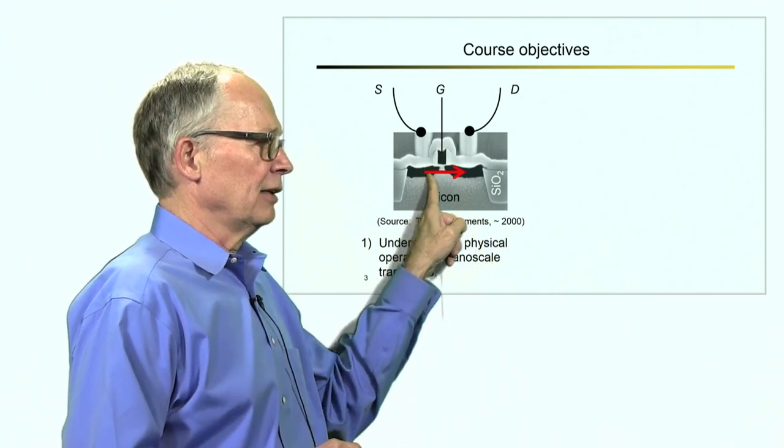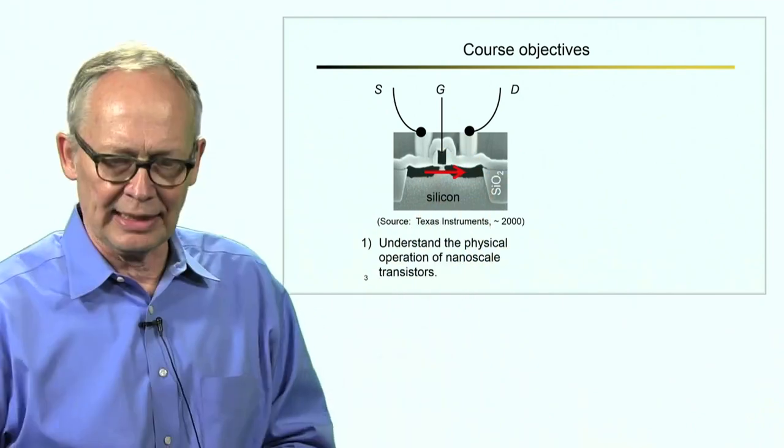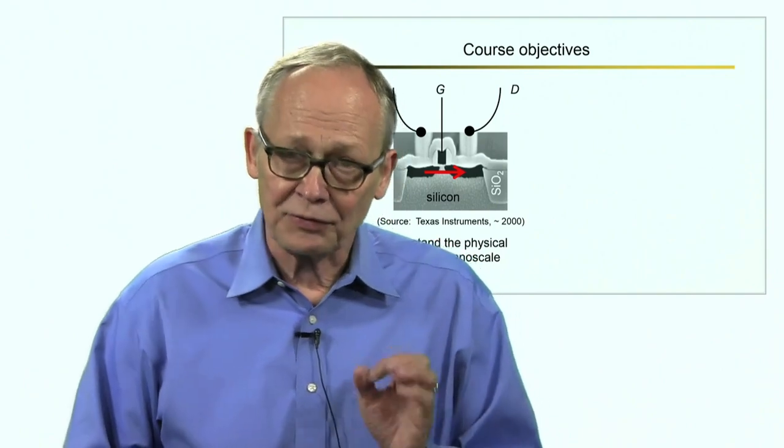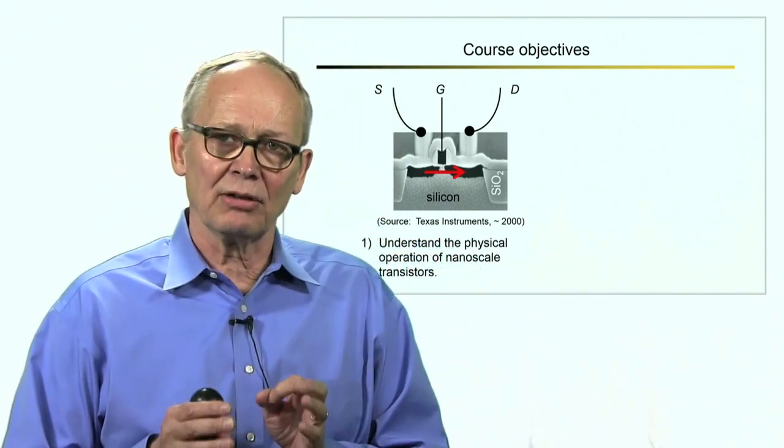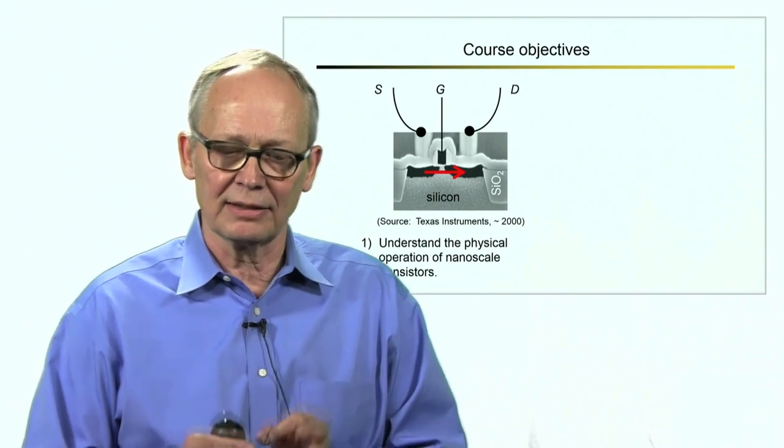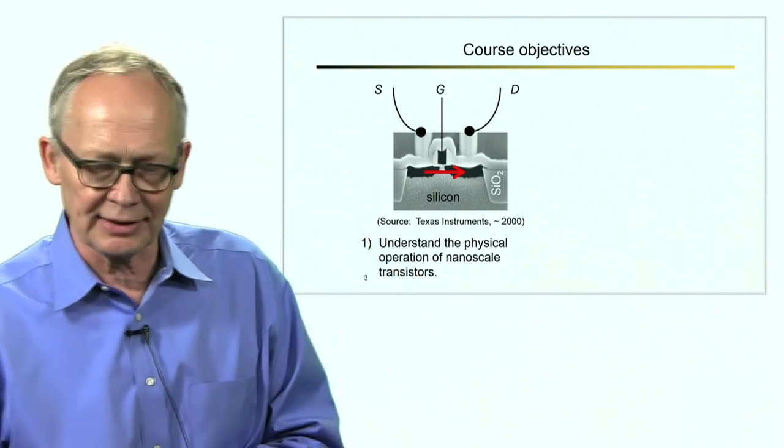When we switch the device on, electrons flow from the source to the drain and out the external lead. The first objective of this course is to understand the physical operation of these devices, the flow of electrons and holes inside the transistor.